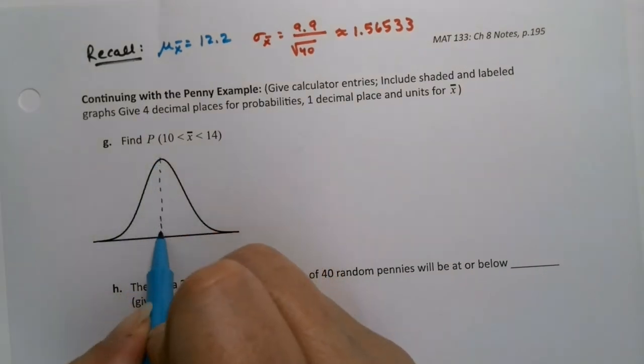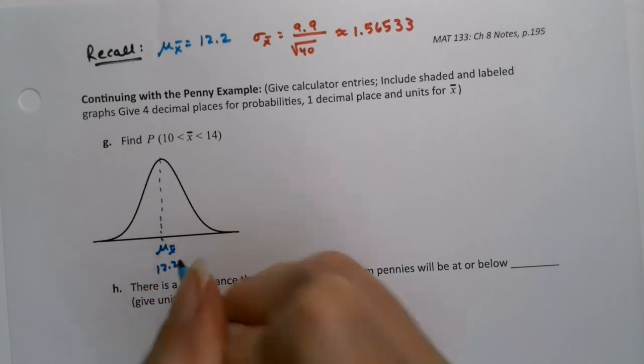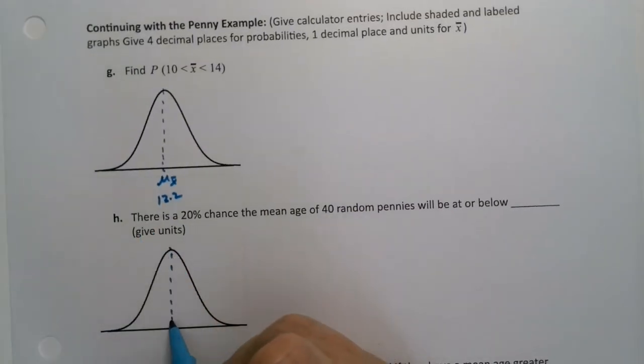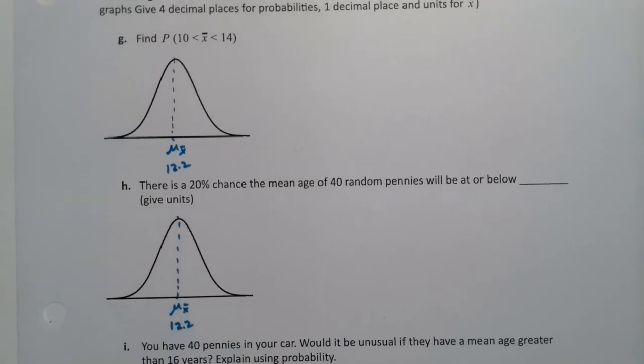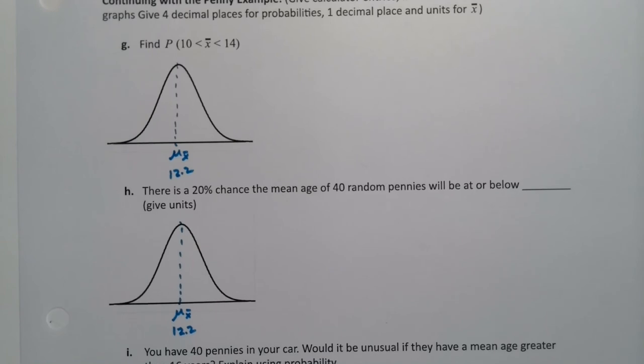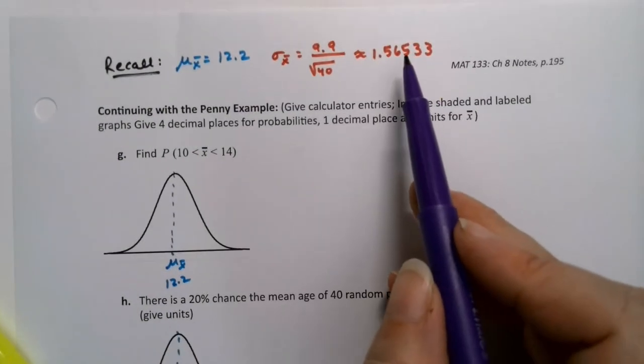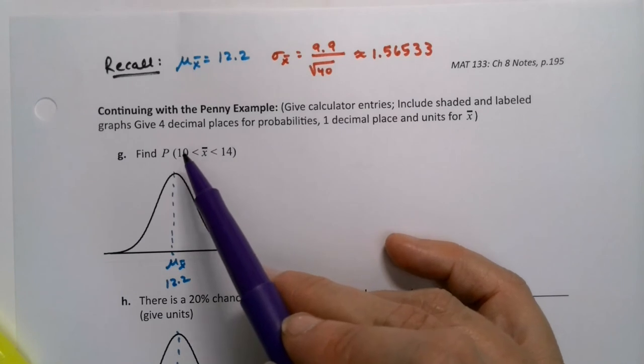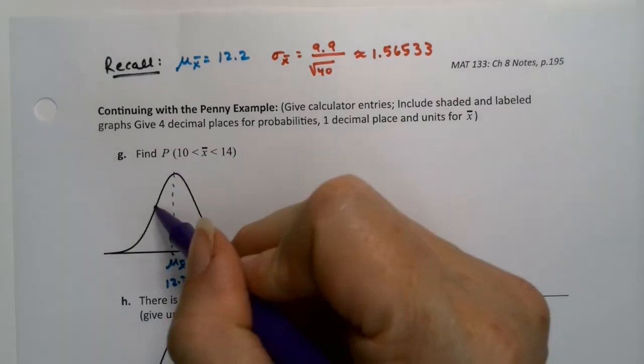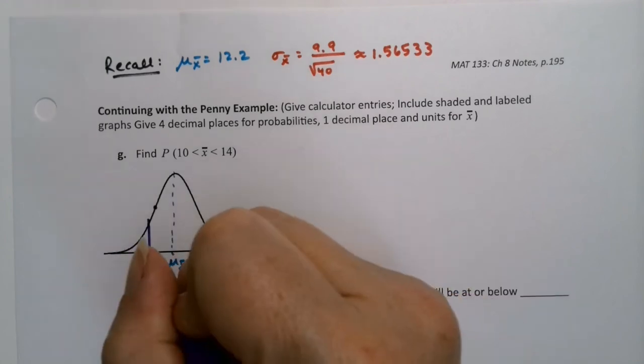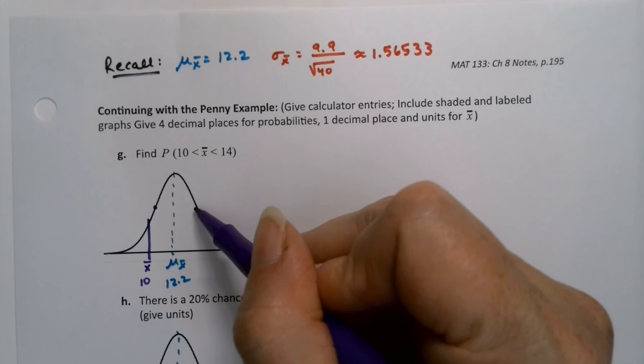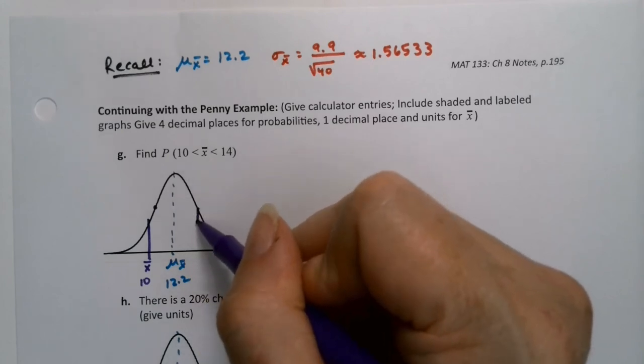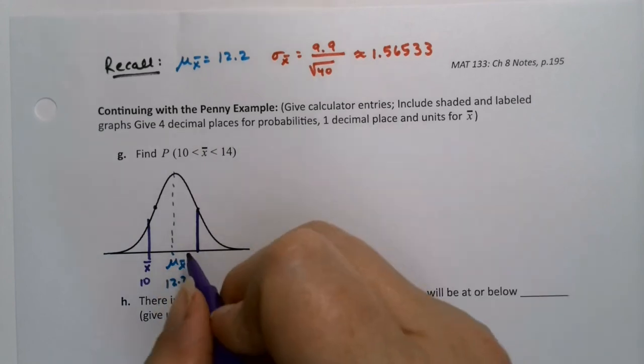So let's shade this graph and figure everything out. Remember, the center line right here is mu sub x bar, which is 12.2. As a matter of fact, I can actually draw that on every single one of the graphs on this particular page because it's the same for all of them. The center line never changes unless you're on a different problem altogether, which we are not. Alright, now 10 and 14. Remember that one standard deviation of the sampling distribution is 1.5. So if you take 12 and take away 1.5, you're at 10.5. We want to go to 10, so we're obviously past one standard deviation, which would be about there. So 10 is going to be over here somewhere. So there's x bar which is 10.